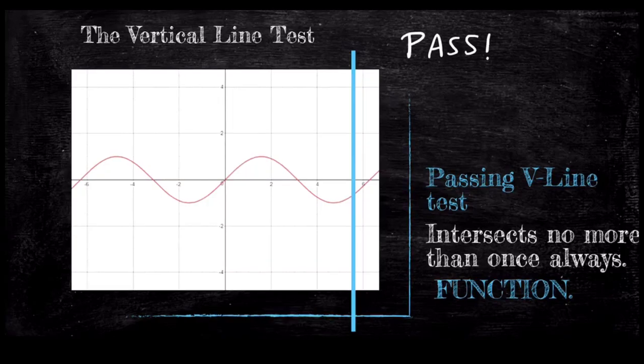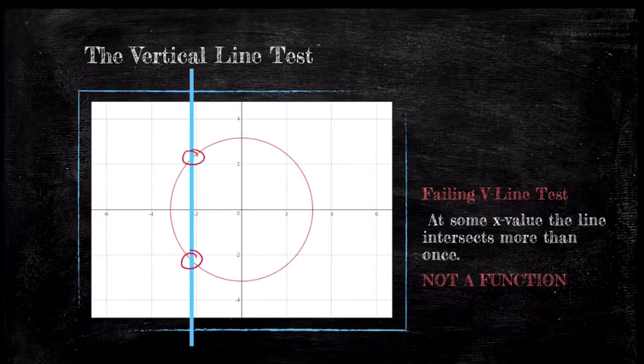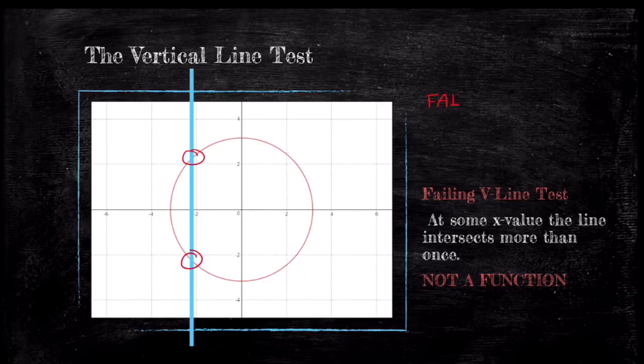Let's see a relation that doesn't pass. As we drag our vertical line across the circle, we see it intersects the circle twice. We can stop and conclude this relation is not a function as it fails the test. Going back to the definition, this relation is not a function because the input negative 2 was sent to two different outputs, approximately 2.4 and negative 2.4. When you explain why a relation is not a function, you only need to note that it fails for just one x value.